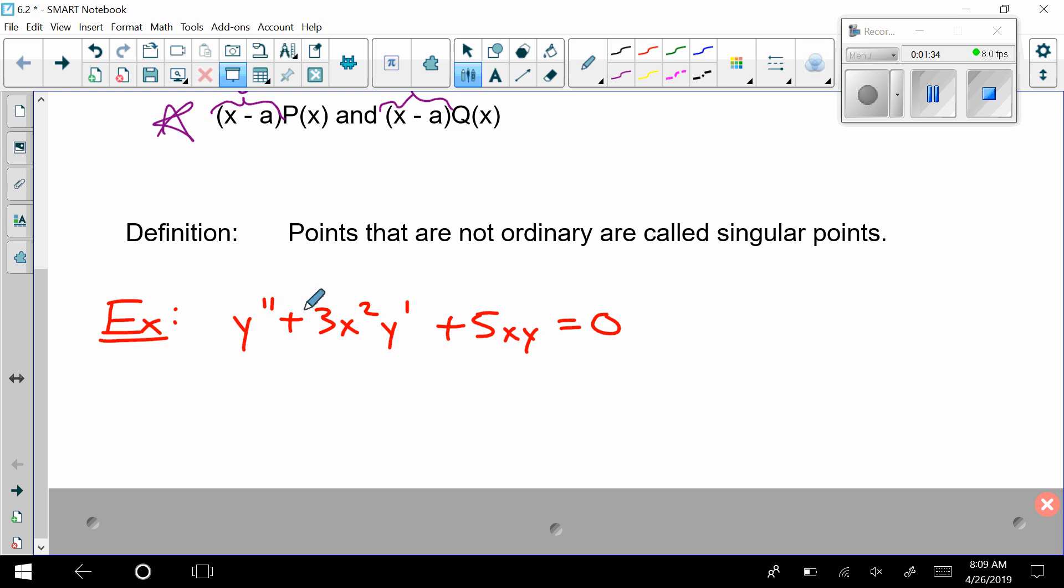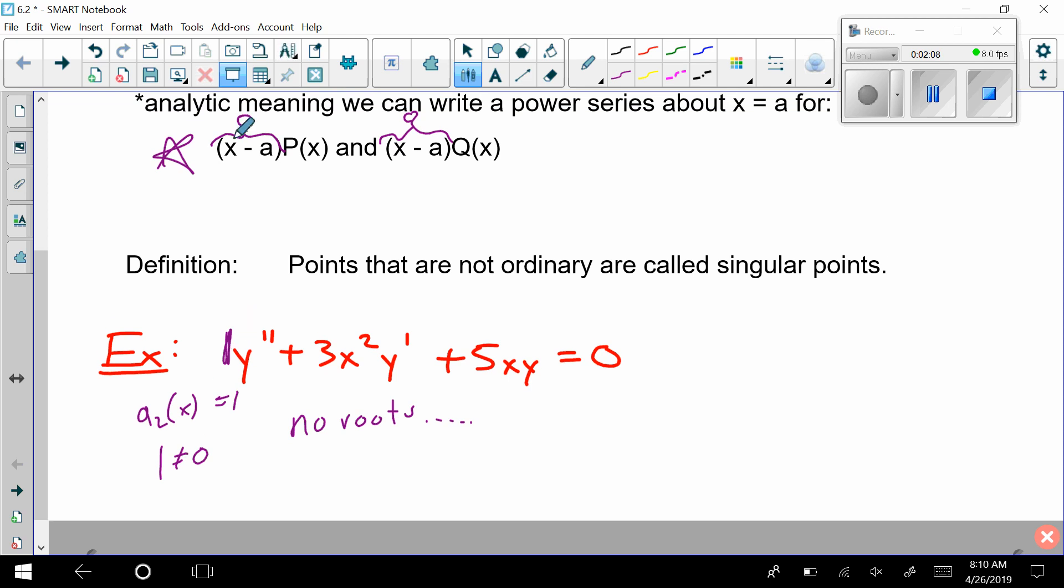So here in this first one, I have y double prime plus 3x squared y prime plus 5xy equals 0. When I'm going to look at this, I see that 1 is out here. So really, a sub 2 of x is equal to 1. And if I try to set that equal to 0, if I took 1 and I set it equal to 0, that's clearly not true. It has no roots. And if there are no roots, because there's nothing that makes this part here 0, then all of the a's that I place up here are ordinary. So no roots here, so thus, all points are ordinary.